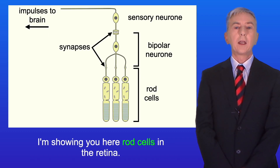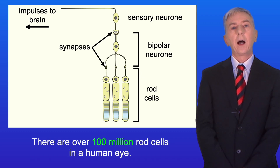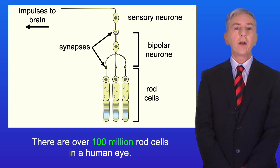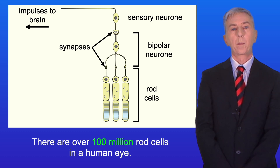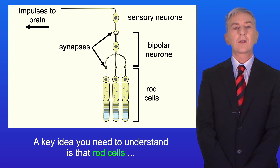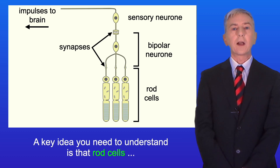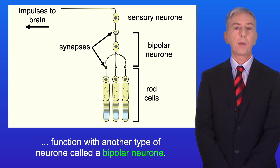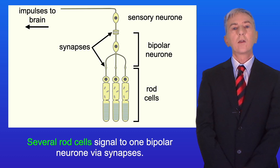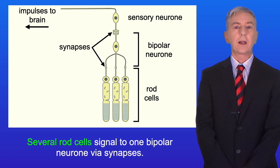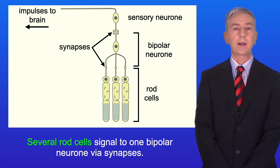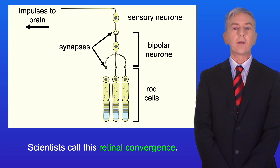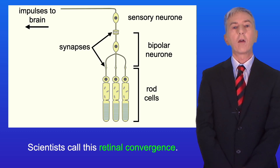Here are rod cells in the retina, and there are over 100 million rod cells in a human eye. A key idea you need to understand is that rod cells function with another type of neuron called a bipolar neuron. Several rod cells signal to one bipolar neuron via synapses, and scientists call this retinal convergence.